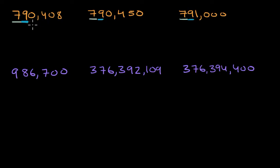Now let's go to the thousands place. I have a zero, a zero, and now I have a one. So this one over here, the 791,000, this is actually going to be the largest of all of these three numbers.